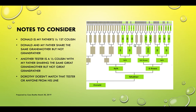Remember, Donald does not share the same grandfather with my father — he shares the same grandmother but not the same grandfather. So Donald and my father share the grandmother, but they don't share Donald's grandfather. I put NA for 'not applicable' on the grandfather.